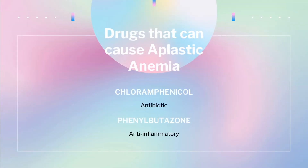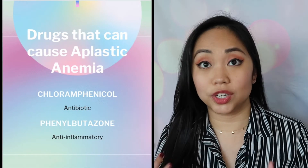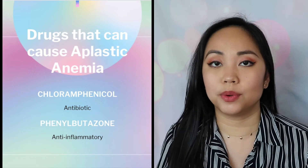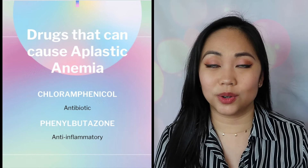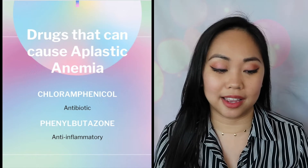Other drugs that can cause aplastic anemia include chloramphenicol, which is an antibiotic, and phenylbutazone, which is an anti-inflammatory. These drugs trigger the body to produce antibodies that cross-react with bone marrow cells, attacking them and stopping production. Oftentimes this is fully reversible once the patient is taken off the medication.